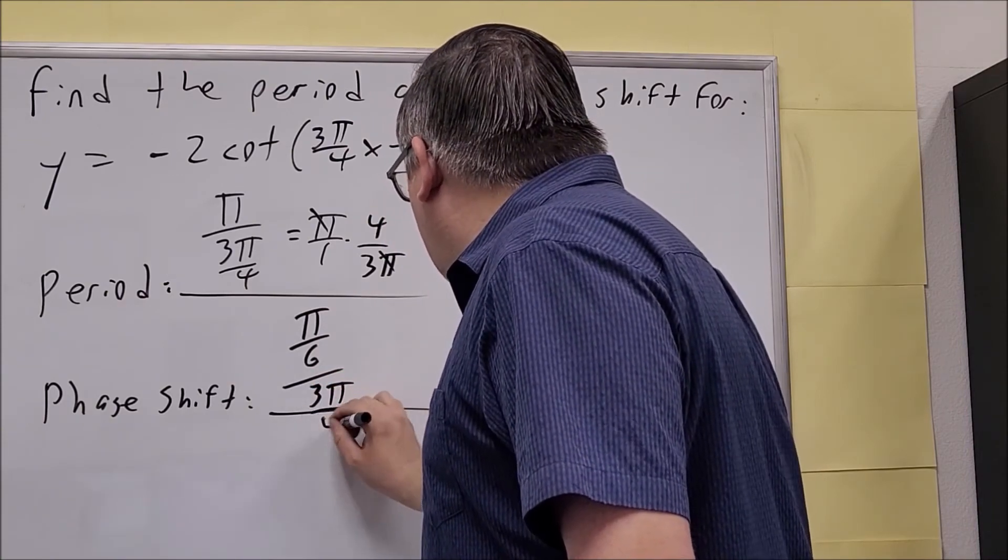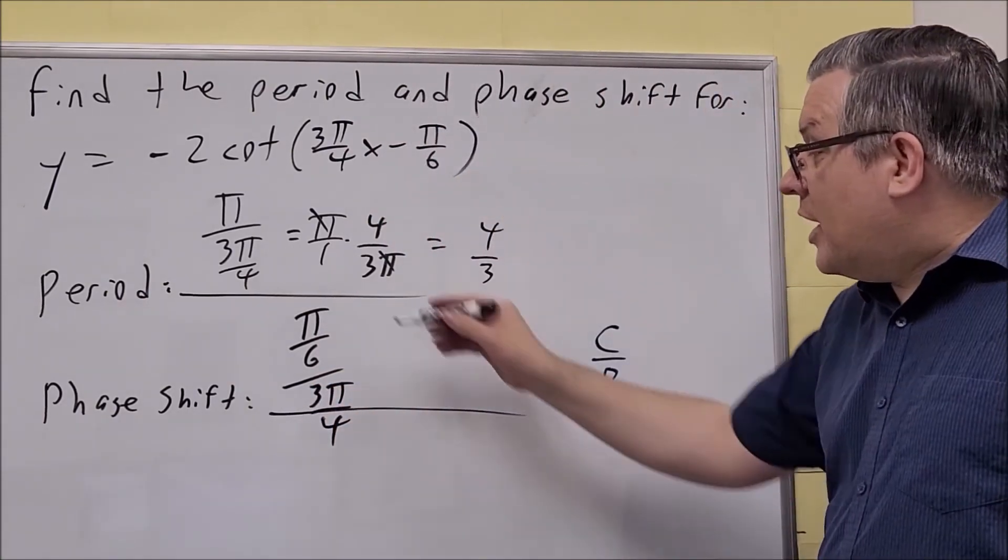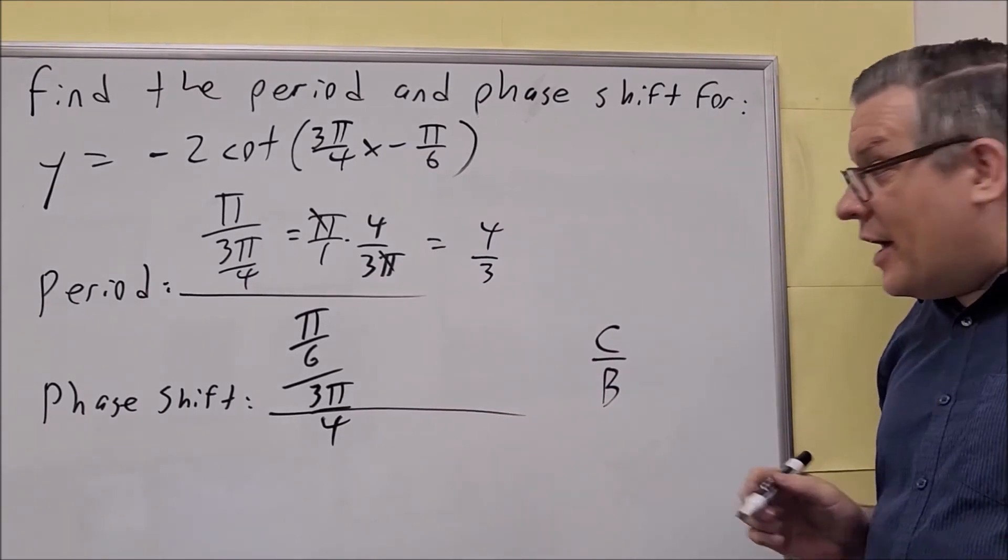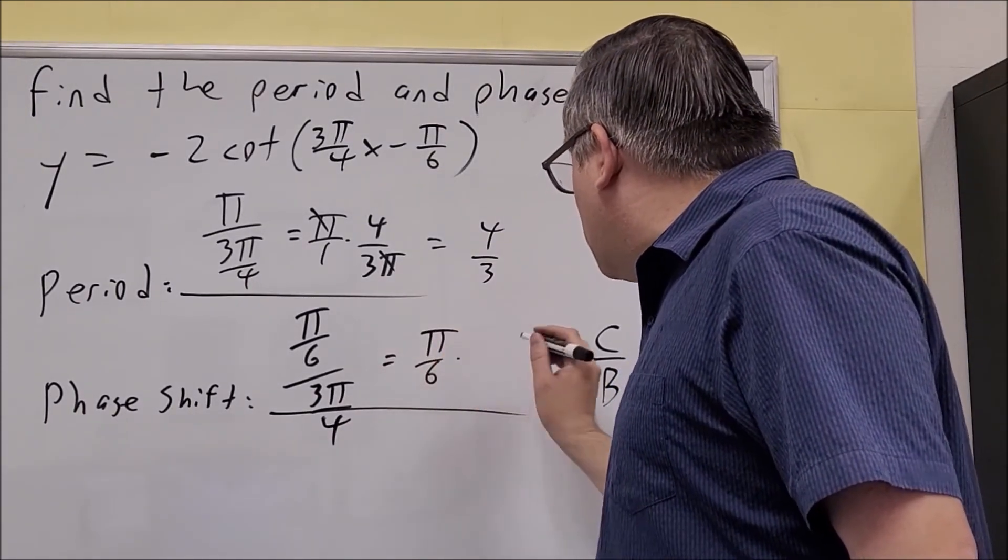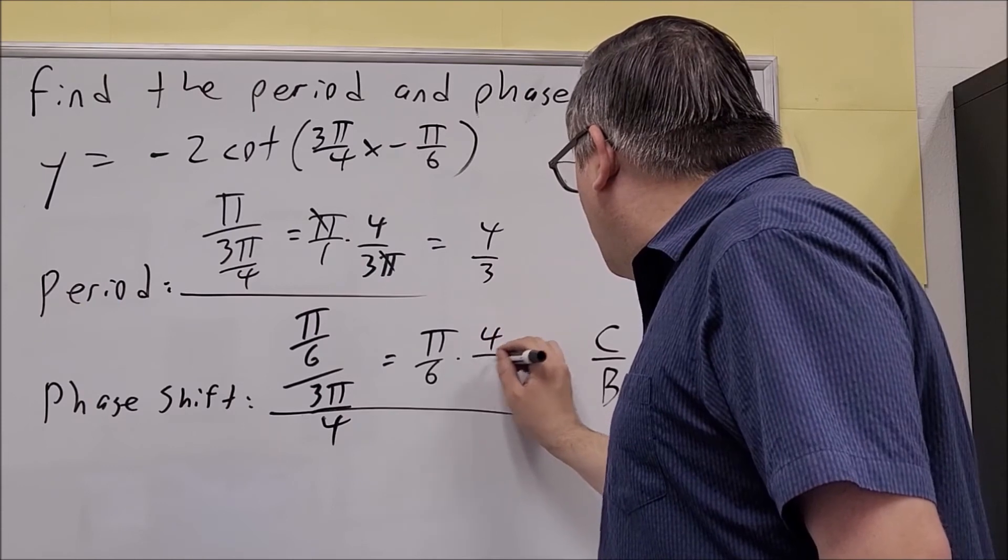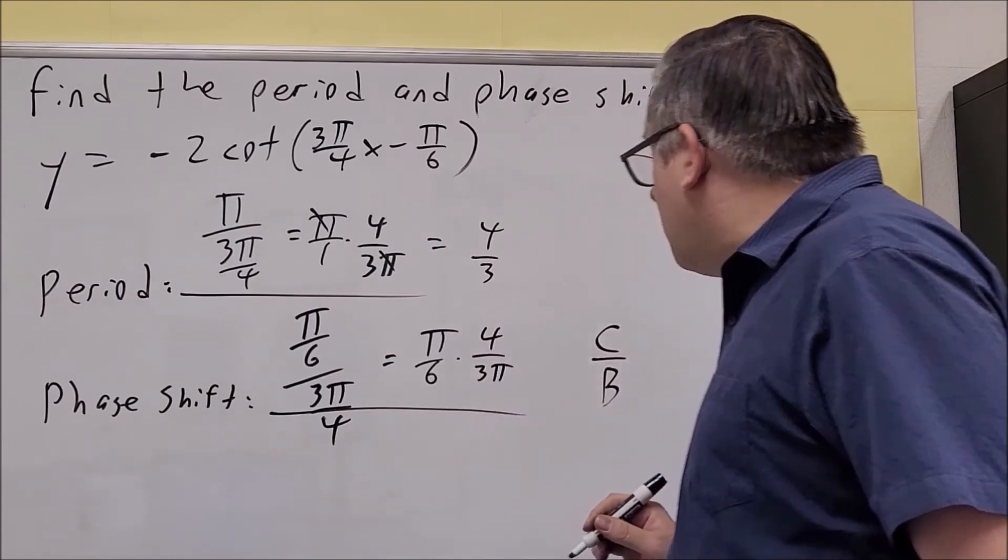3π over 4 goes on the bottom, so we're dividing that out. π over 6 times 4 over 3π. We're flipping and multiplying.